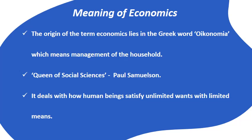Economics is a social science. There are two branches of science — one is natural science and another is social science. Natural science is one whose laws are universally acceptable and their validity can be tested. Natural science includes subjects like mathematics, physics, and chemistry, where the laws are known and universally accepted.